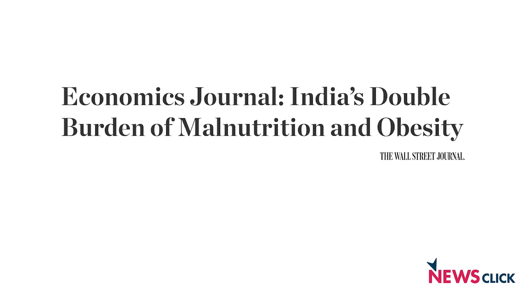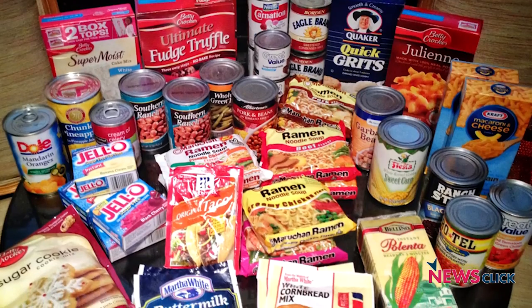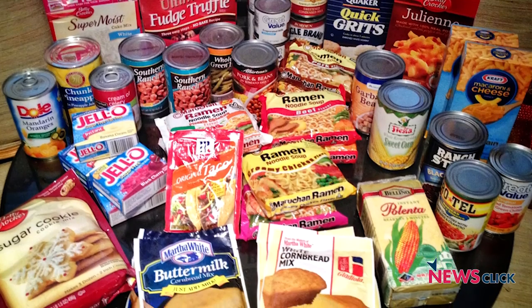Now we have a very peculiar situation where the rich are also facing a kind of malnutrition because they are becoming obese. So we have a double burden of malnutrition in India — the poor are highly malnourished, the urban poor are also getting obese because of prepackaged food, and the middle class is also getting fairly obese.